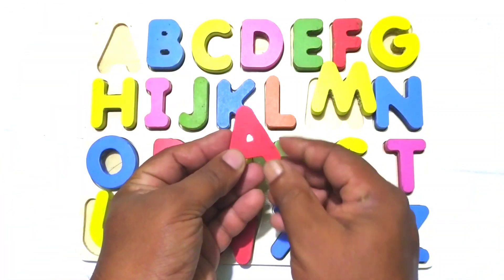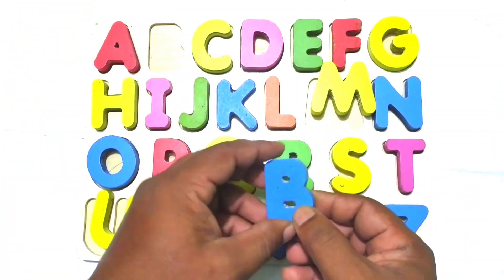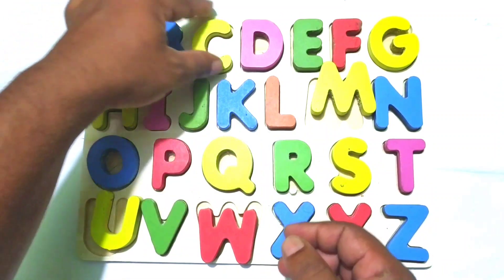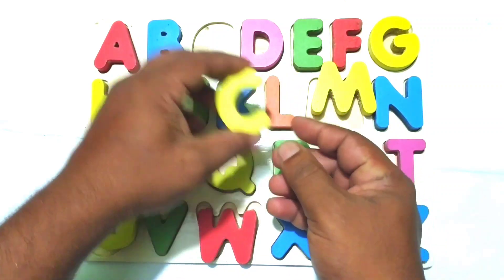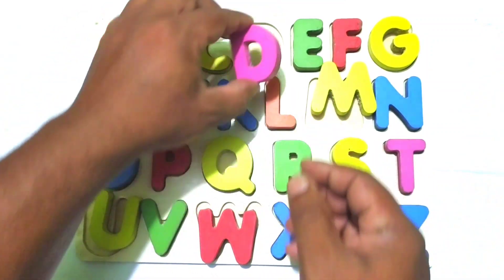A. A for Apple. B. B for Banana. C. C for Cat. D. D for Dog.